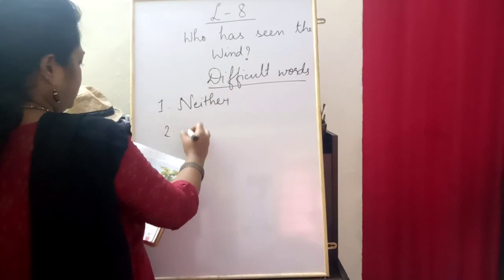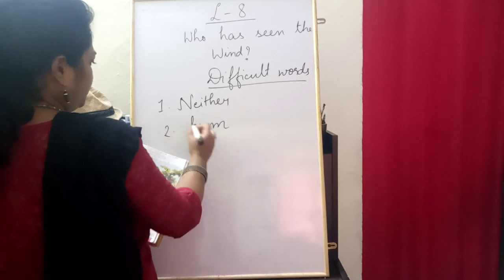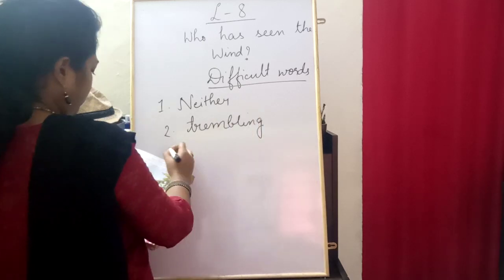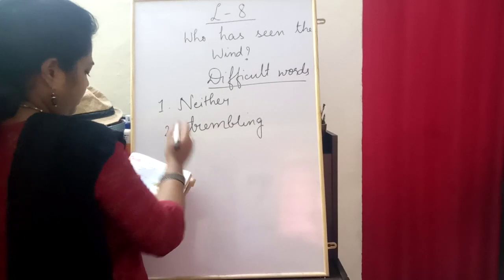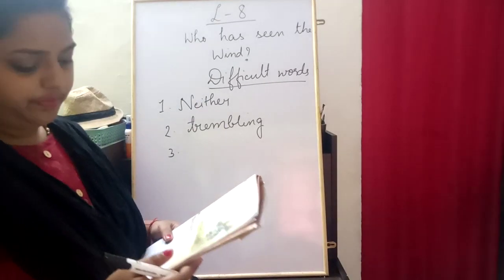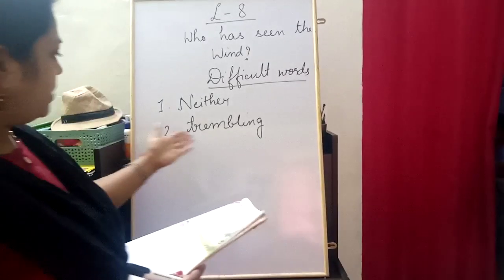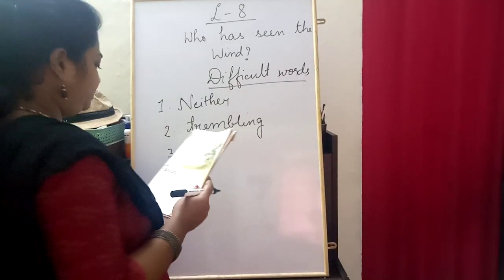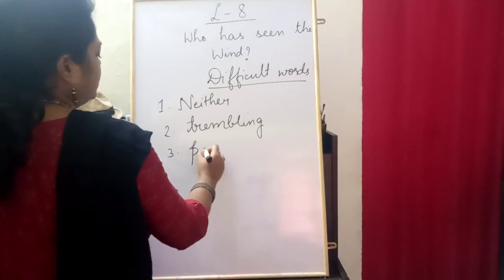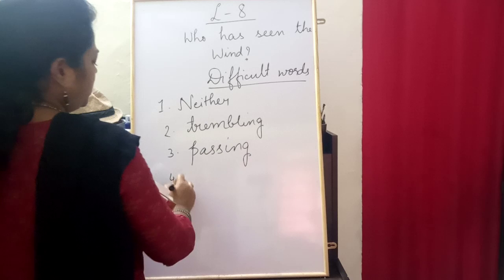The second word is 'trembling.' Both word meanings are given: 'neither' means not one or the other of two things, and 'trembling' means shaking. Third word is 'passing' — passing means going through, crossing through.